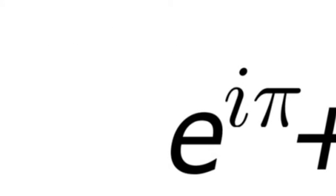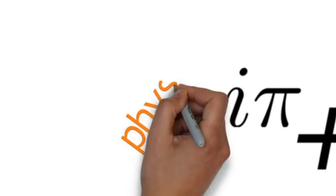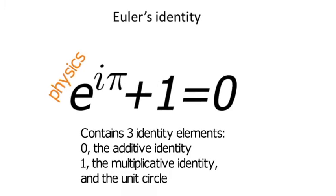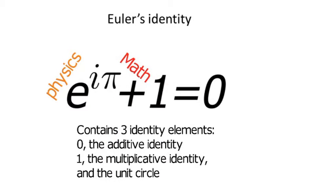In an easier form, the equation just states that -1 plus 1 is equal to 0, because e to the i pi is just -1.